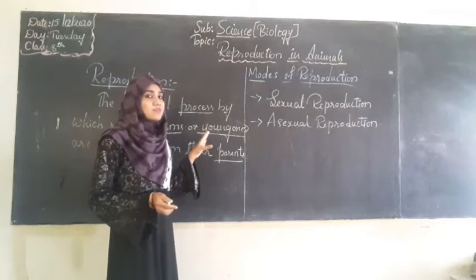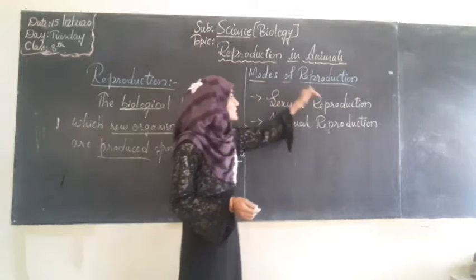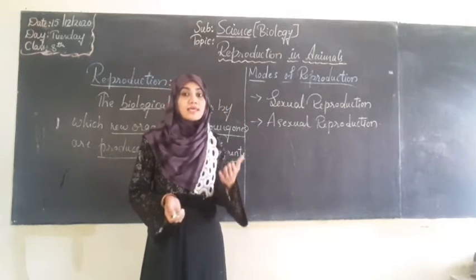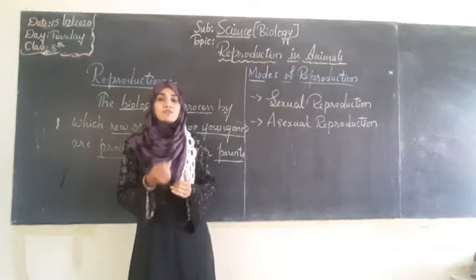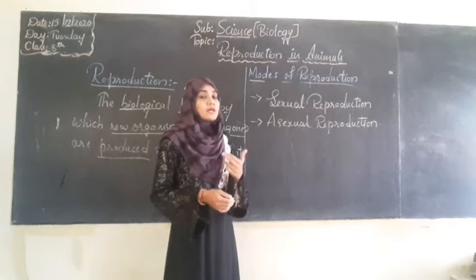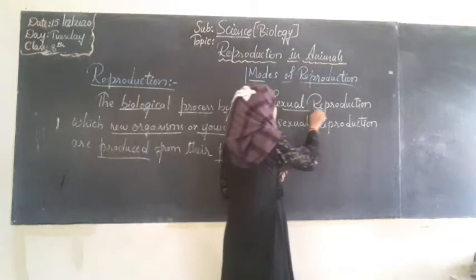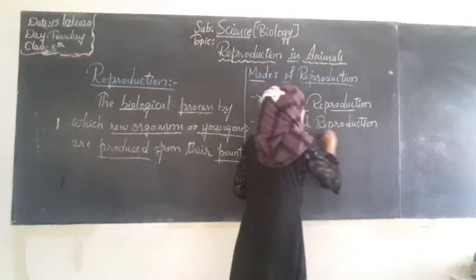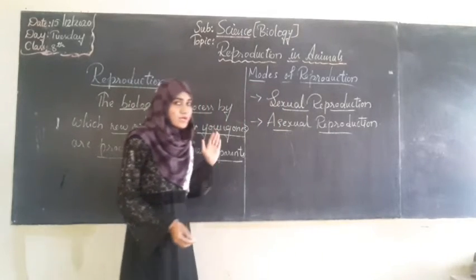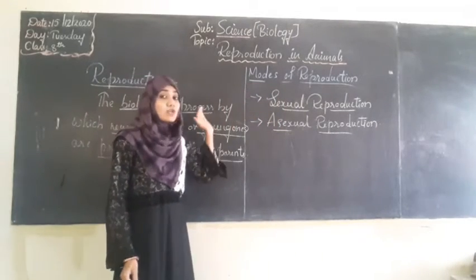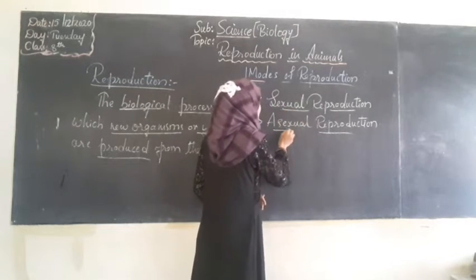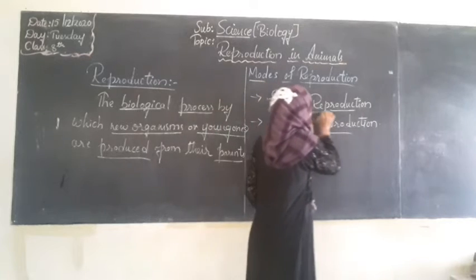In this chapter we will discuss reproduction in animals. We will discuss the modes of reproduction. Just like in plants there are two types — asexual and sexual — we animals also have two types: sexual reproduction and asexual reproduction. We will also discuss the process, importance of reproduction, and both sexual and asexual reproduction.